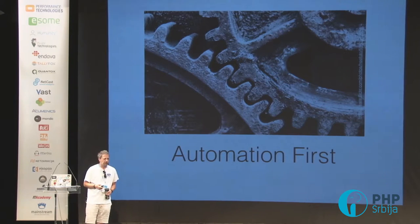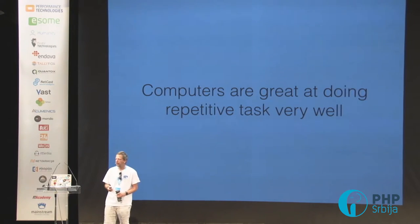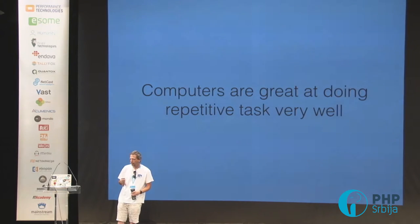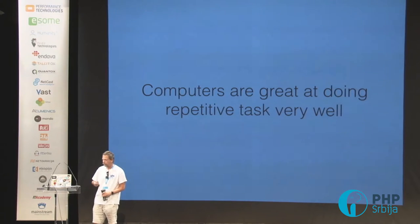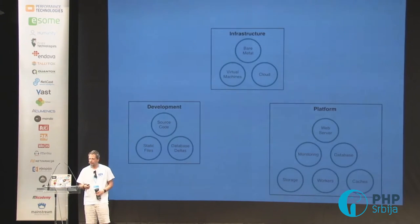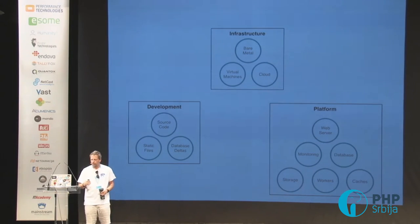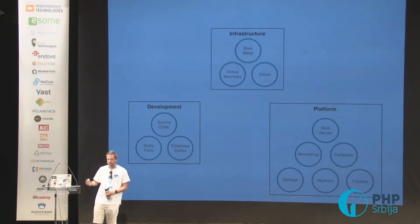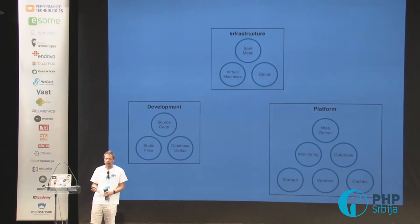So let's look at the automation parts first. Computers are great at doing repetitive tasks very well, and yes they are — they do things in repetition over and over and over again, so you don't have to worry about things. We have development, we have infrastructure, and we have our platform, and depending on what kind of project or application you're working on, it might have less or more components in that configuration.